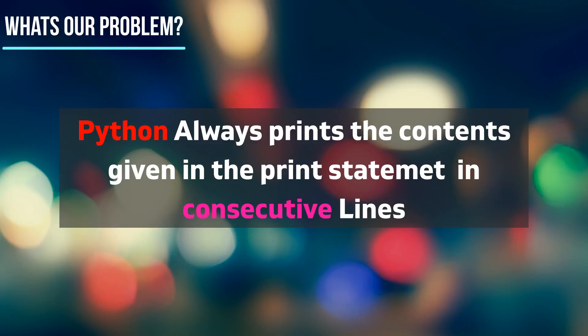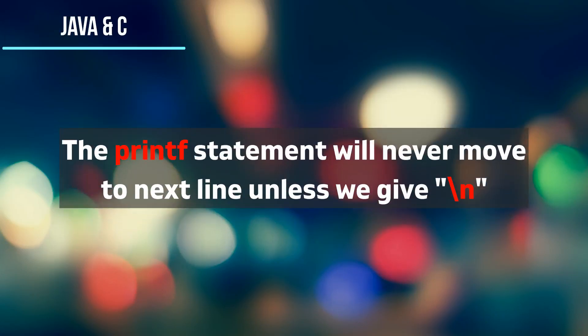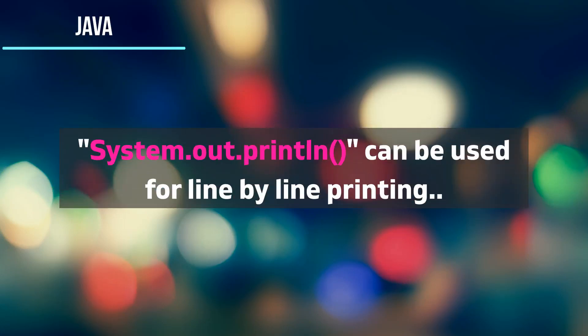Python goes to the next line with every print statement, but in Java and C you can simply use print and it will never go to the next line unless you give a slash-n. In Java, if you use println it will go to the next line.